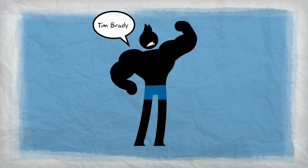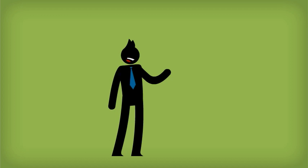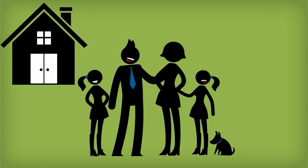Meet Tim, Tim Brady. Tim owns a successful sports equipment business and Tim, his wife Janelle, and their two kids are your typical happy-go-lucky family.